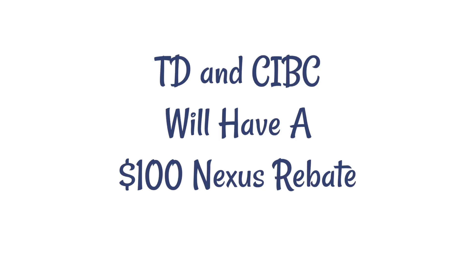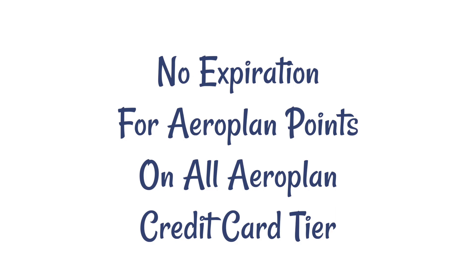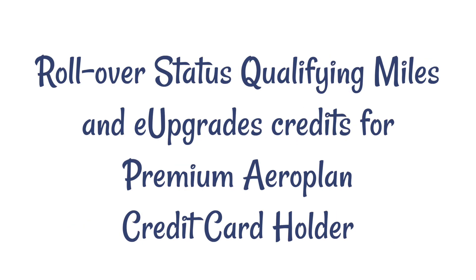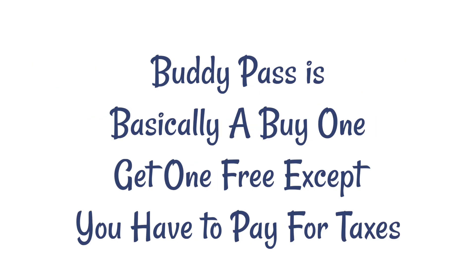TD and CIBC cards will also have a $100 Nexus rebate. There's also no expiry on Aeroplan points on all credit card tiers. You can also get an elite status qualification boost of 1,000 status qualifying miles and 15 qualifying segments for core and premium tier credit cardholders. There's also rollover status qualifying miles and rollover e-upgrade credits for people who have the premium tier credit cards, and many of these cards will offer a buddy pass — essentially a buy-one-get-one-free pass where you only pay taxes.